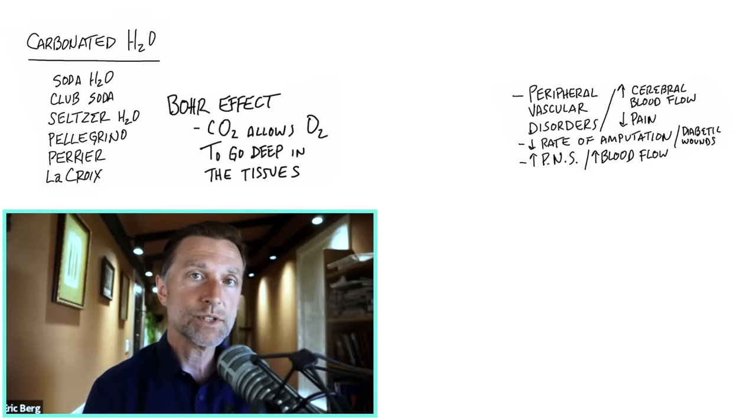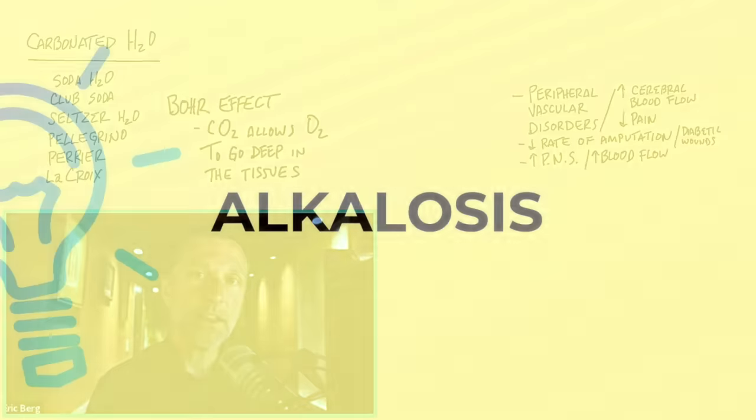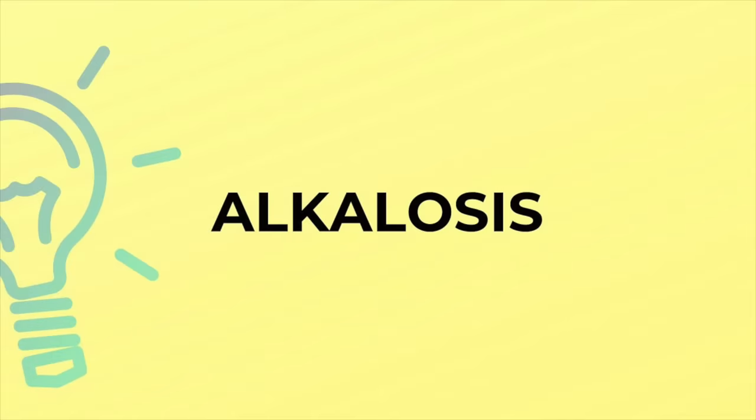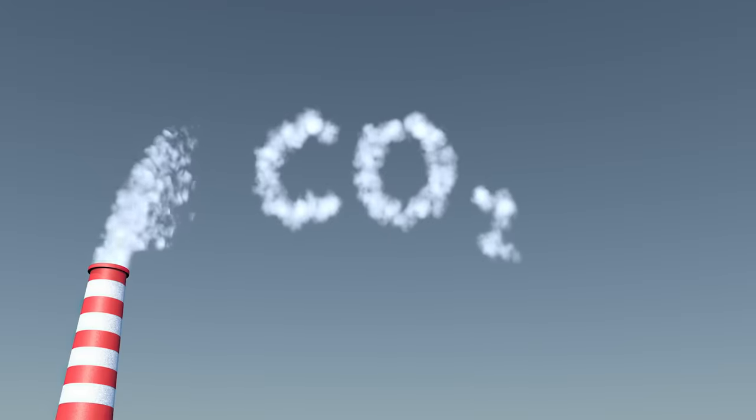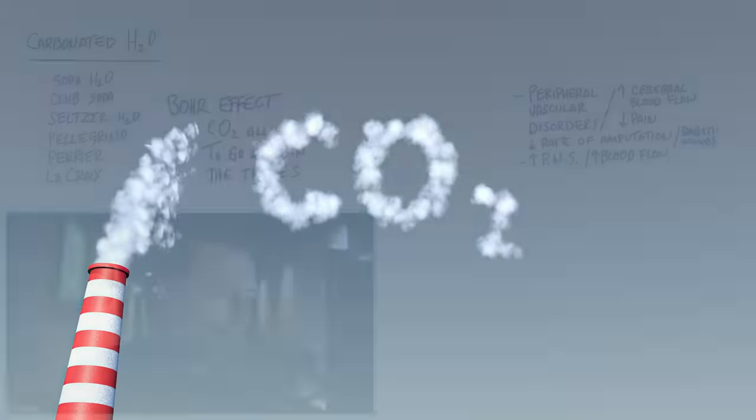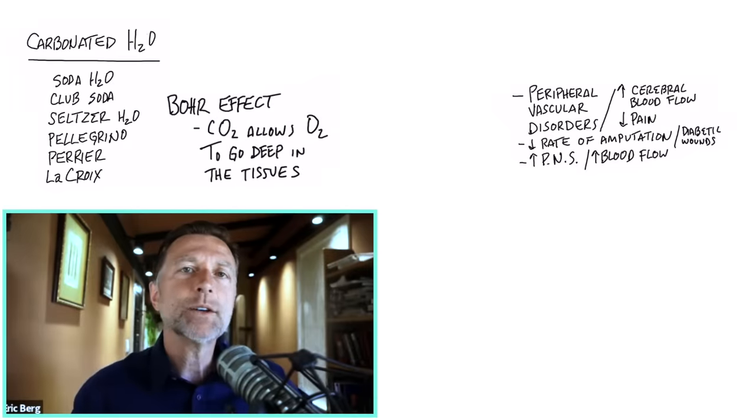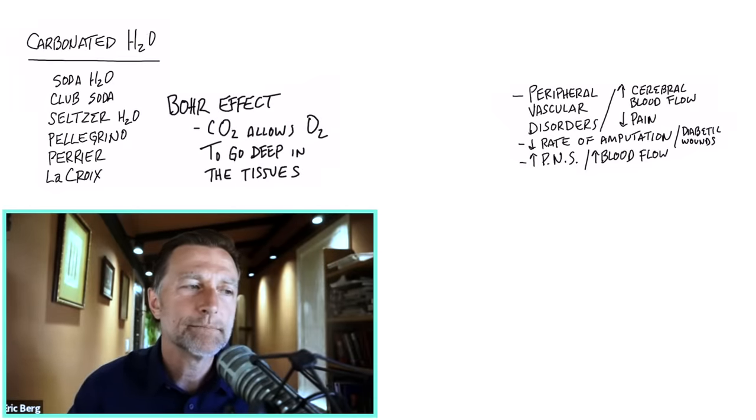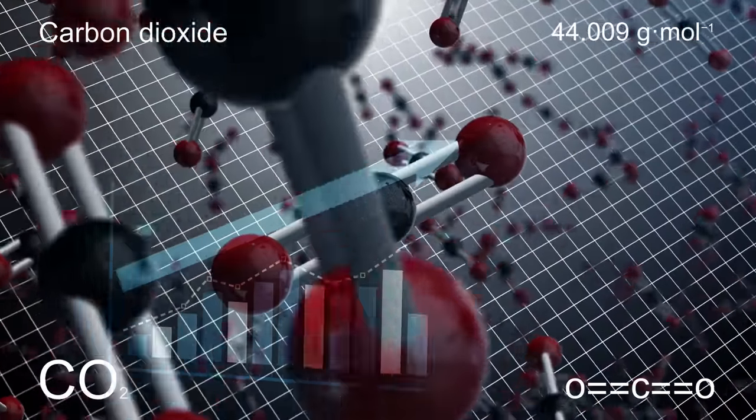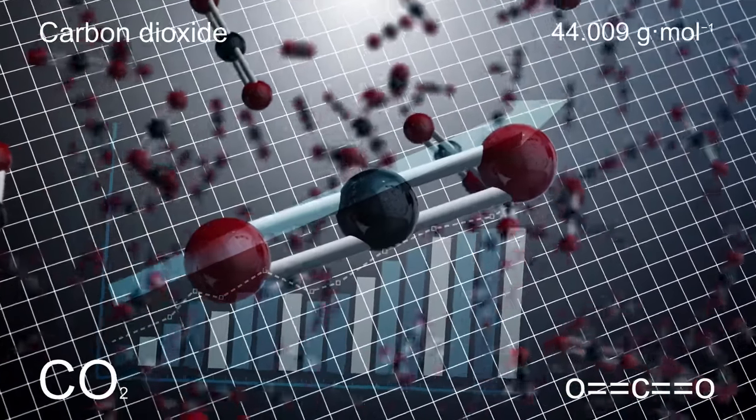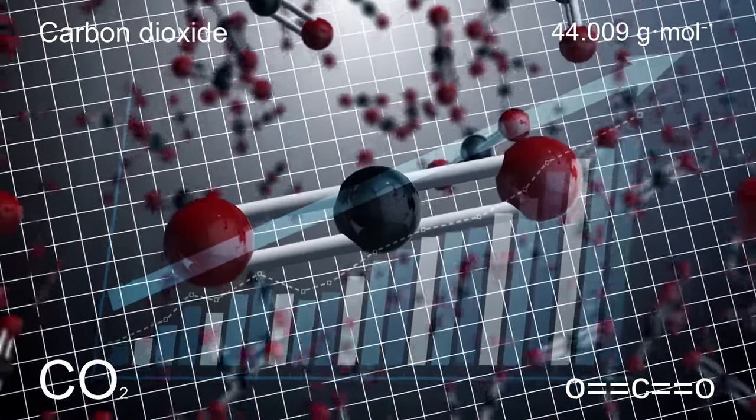When you deprive the tissue of CO2, you actually can develop alkalosis—a state of being too alkaline. So without that CO2 turning into carbonic acid, you can develop an overly alkaline state. Then I wanted to figure out, is there any relationship or significant improvement in shrinking tumors or stopping the spread of cancer by increasing CO2? And I found a bunch of research, which is also very interesting.